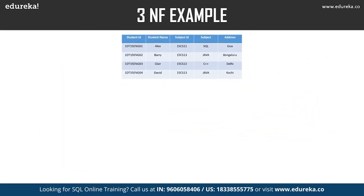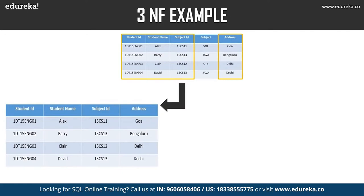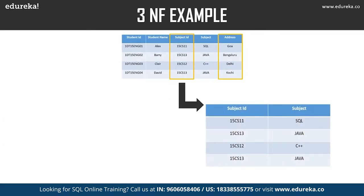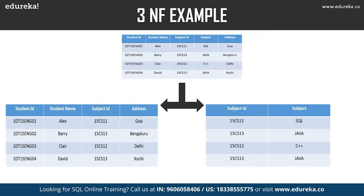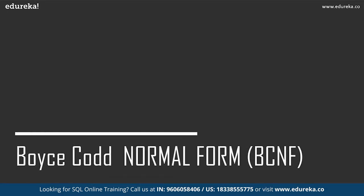To achieve third normal form, we divide the table. The first table stores student ID, student name, subject ID, and address — all columns referring to the primary key, student ID. The second table has subject ID and subject, where subject is dependent only on subject ID and not on student ID. All non-key attributes are now fully functionally dependent only on the primary key of their respective table.